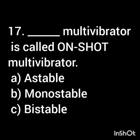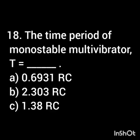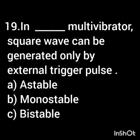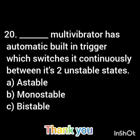Which of the following multivibrators is called a one-shot multivibrator? The time period of a monostable multivibrator T equals — dash. Which multivibrator can generate a square wave only by an external trigger pulse? Which multivibrator has an automatic built-in trigger that switches it continuously between its two unstable states?